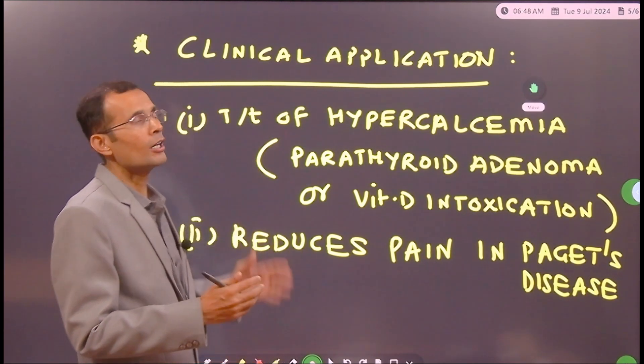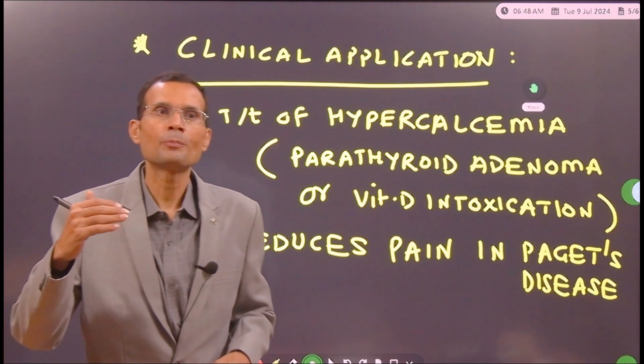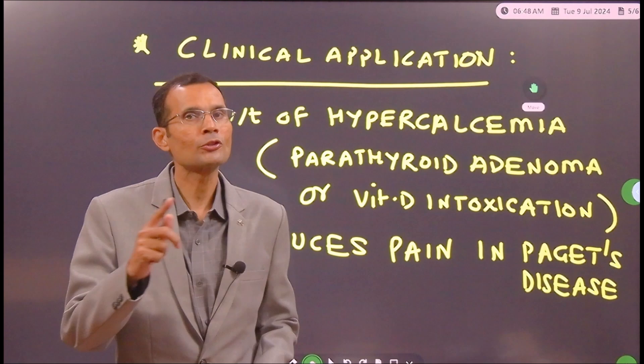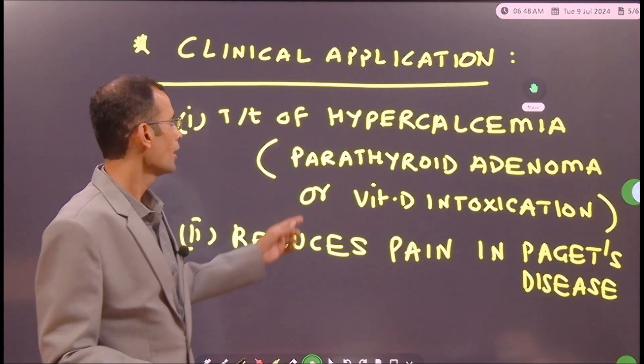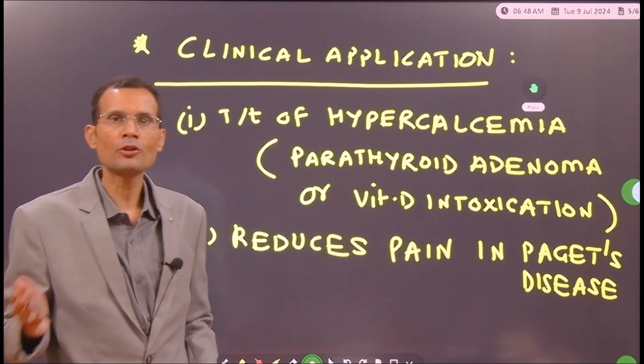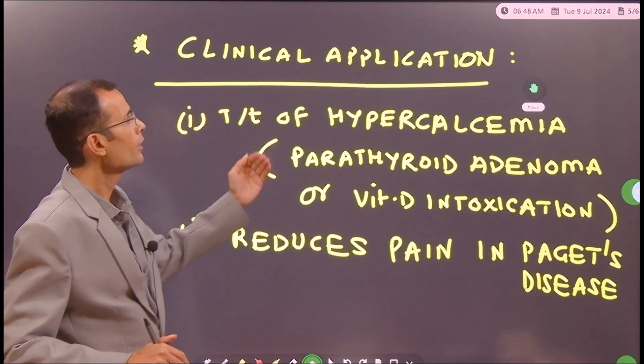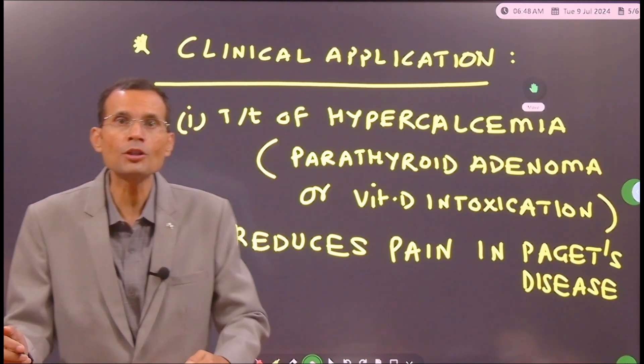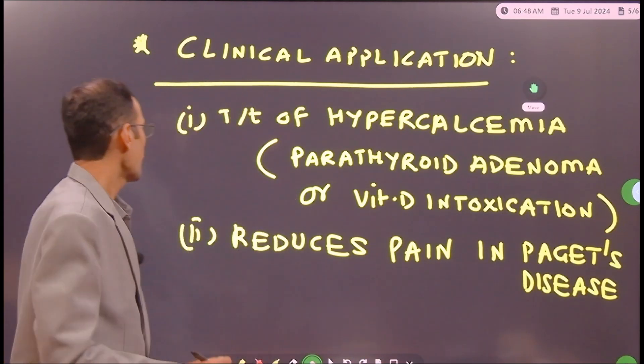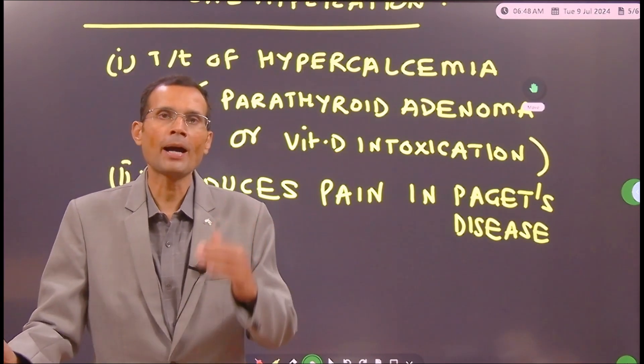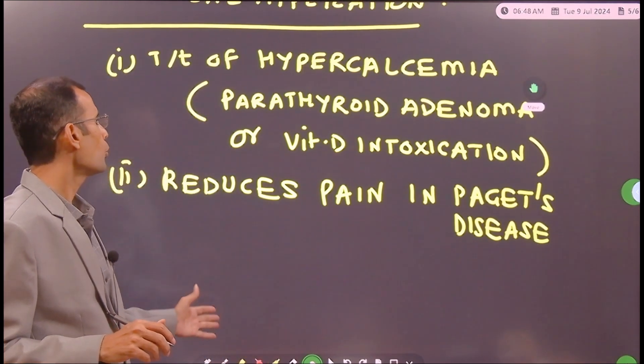When is it that there is possible hypercalcemia? For instance, if there is parathyroid adenoma, it is going to increase plasma calcium, or if there is vitamin D intoxication, again it will increase plasma calcium, and that is when administration of calcitonin will be useful.